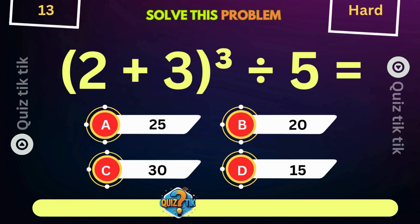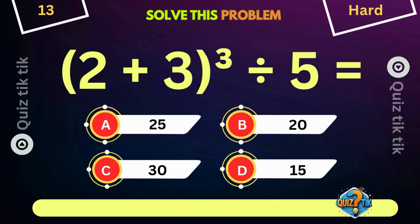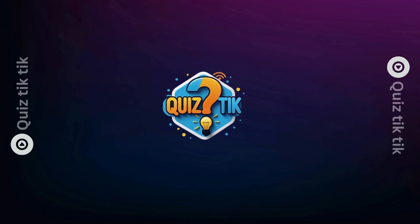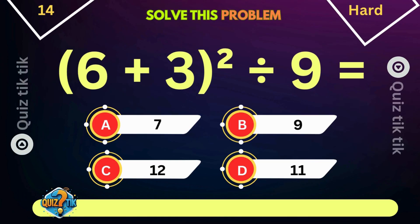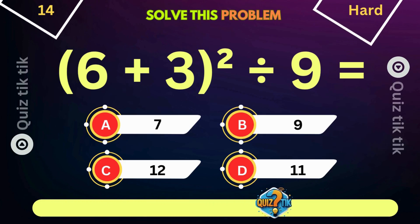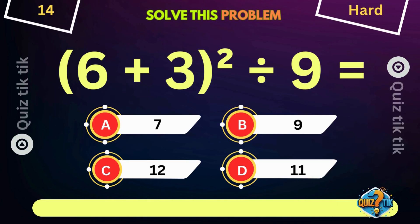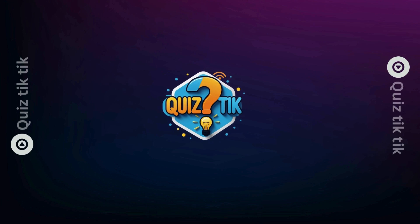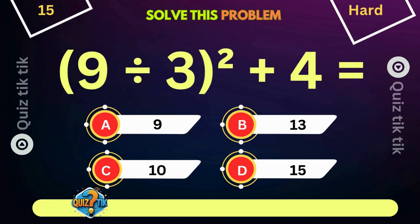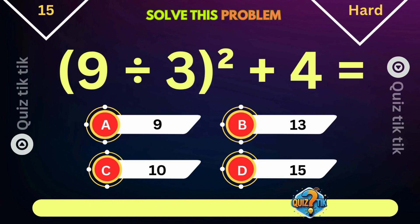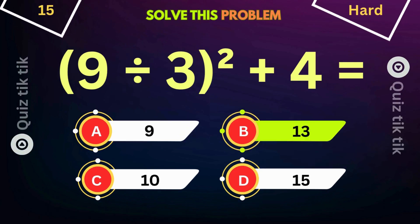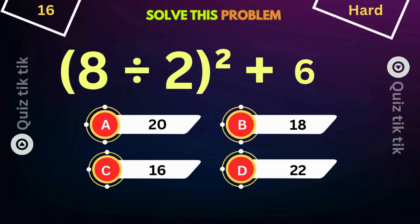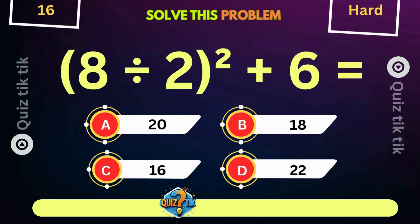What is 2 plus 3 cubed divided by 5? What is 9 squared divided by 9? What is 9 divided by 3, squared, plus 4? What is 8 divided by 2, squared, plus 6?